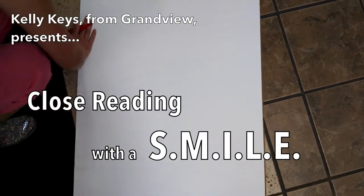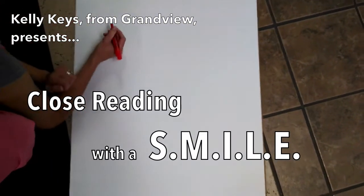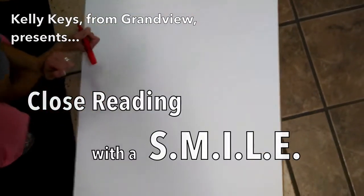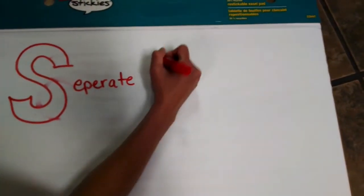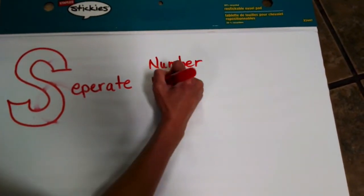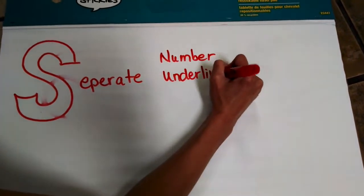Now I can sit on the floor. Oh yeah, long rubber bands. Now are you ready? I'm ready. Okay, so the S—we separate. We number and underline paragraphs.